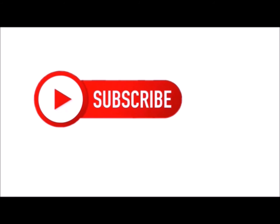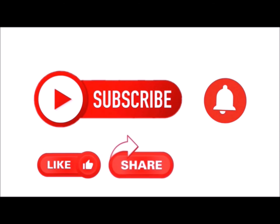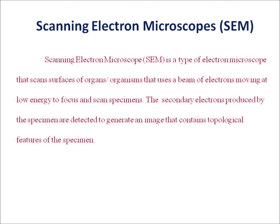Before going to the topic, please subscribe my channel, press the bell icon for notifications, like, share among your friends and comment. Scanning electron microscope is a type of electron microscope which can scan surfaces of organs or organisms by using a beam of electrons. The secondary electrons produced by the specimen are detected to generate an image that contains topological features of the specimen.